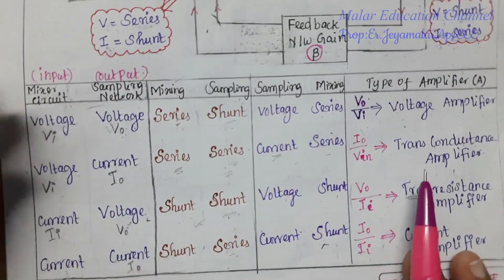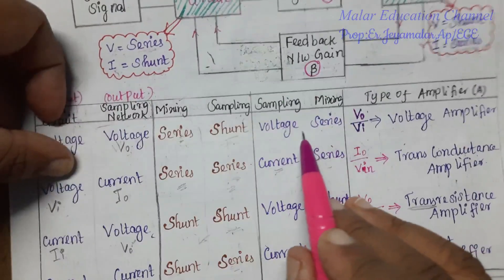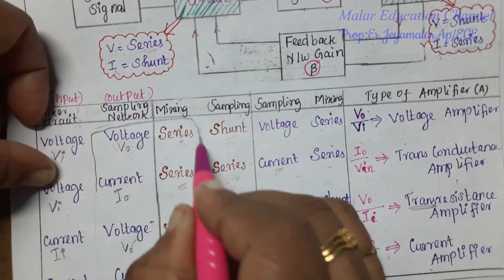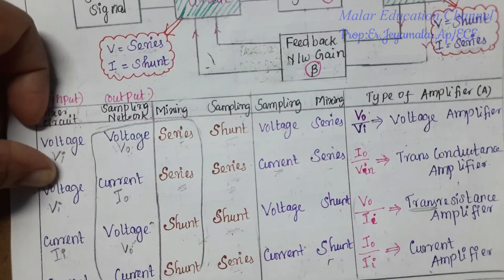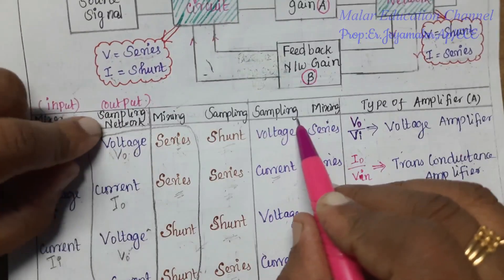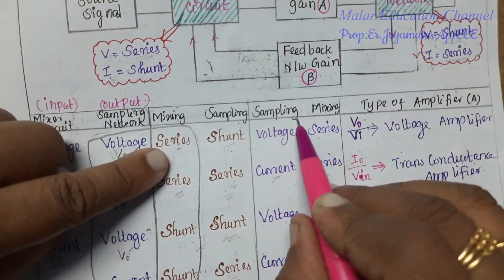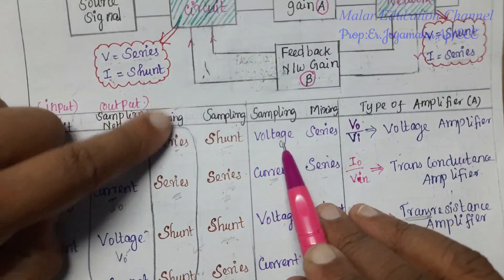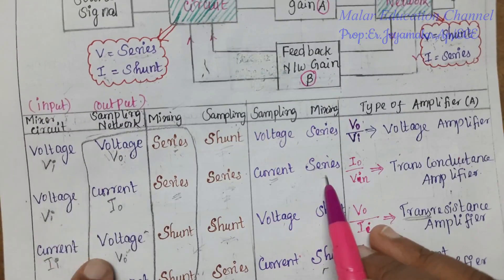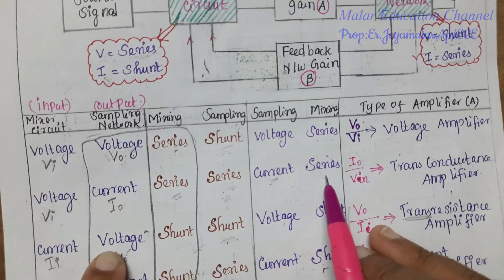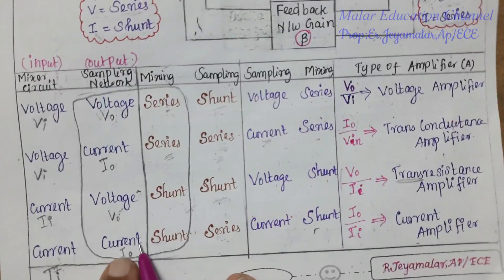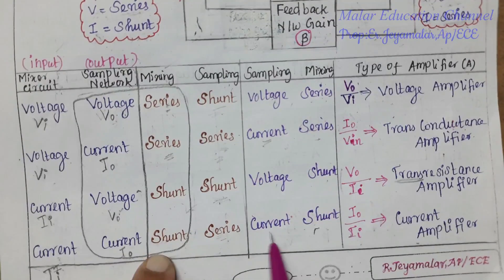For the sampling-and-mixing column: sampling voltage with mixing series; sampling current with mixing series; sampling voltage with mixing shunt; and last one, sampling current with mixing shunt.